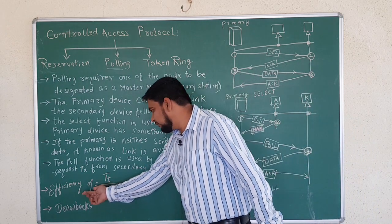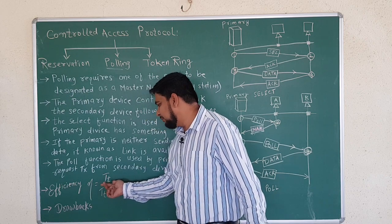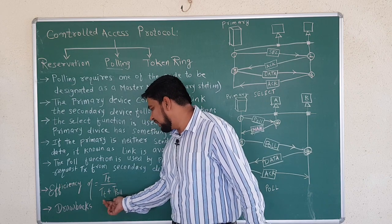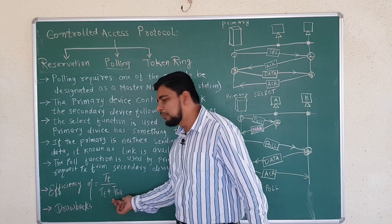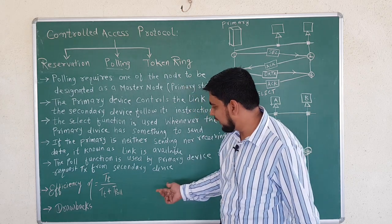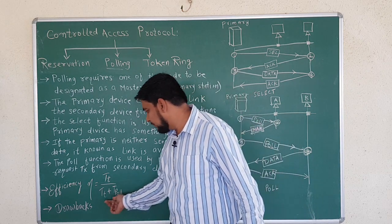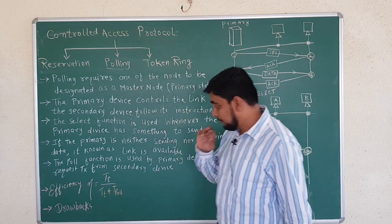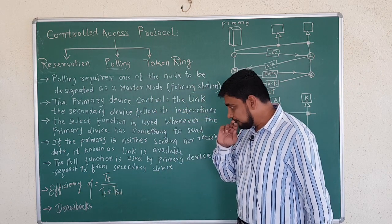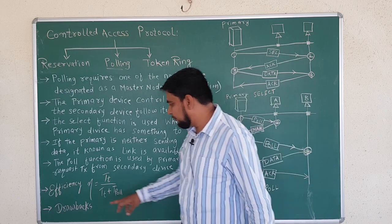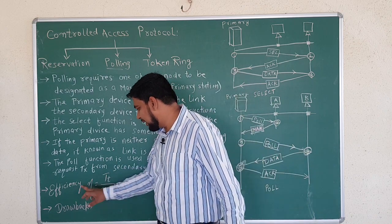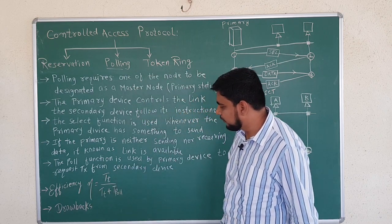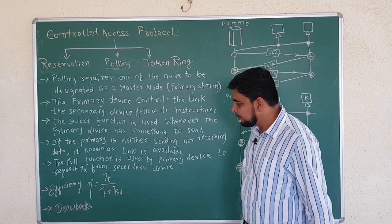The efficiency of polling is calculated as: η = transmission time / (transmission time + polling time). Both polling time and transmission time are required for the calculation of efficiency.